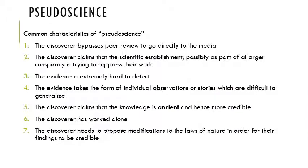Karl Popper was a philosopher with the idea of pseudoscience. Something might be pseudoscience if it meets some of these characteristics: the discoverer bypassed peer review to go directly to the media; they claim the scientific establishment is trying to suppress their work as part of a larger conspiracy; the evidence is extremely hard to detect using very fine detection methods; the effect sizes are very difficult to explain; evidence takes the form of only individualized observations or anecdotal stories that are difficult to generalize to a broader population — as with some COVID-19 treatment claims versus double-blind experiments.